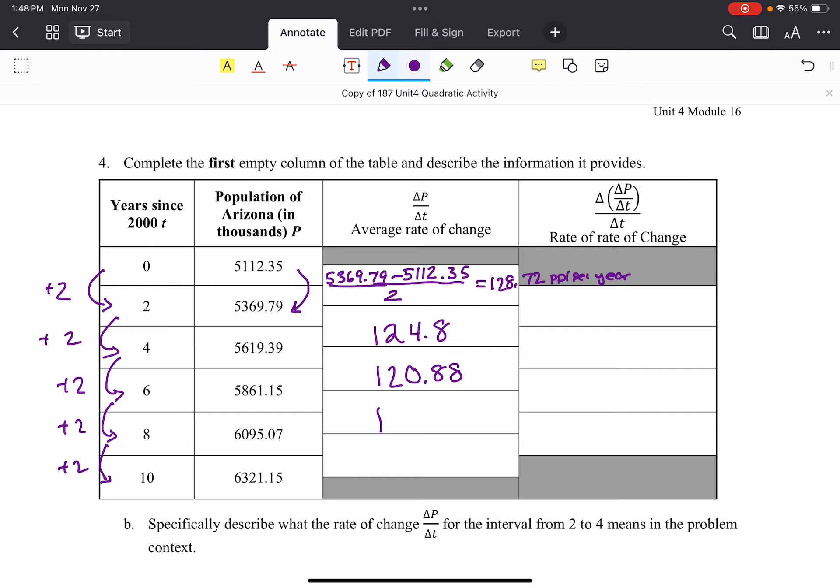And remember initially we said that our function was increasing. And so that makes sense. Like, oh, it's a positive value. My function is, you know, it's a positive slope. It's a positive rate of change. My function is going up.